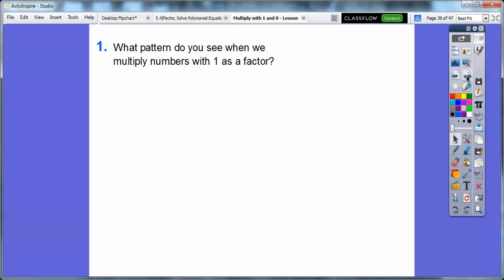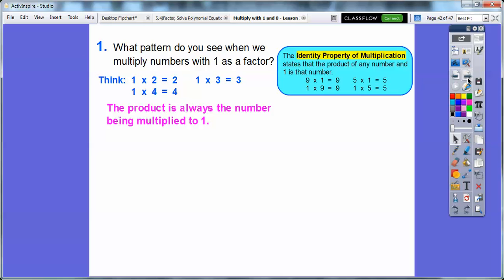Hey, what pattern do you see when we multiply numbers with one as a factor? Think of one times two equals two, or one times three equals three, or one times four equals four. Any number times one, the product is always the number that's being multiplied by one. This is called the identity property. The identity property states that the product of any number and one is that number. So nine times one equals nine. One times nine equals nine. Five times one equals five. One times five equals five. Any number times one is just that number.